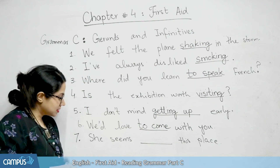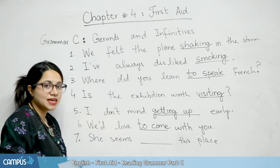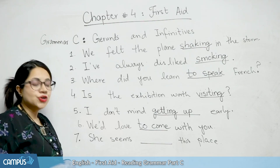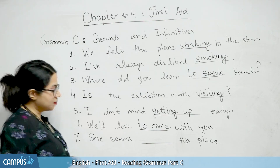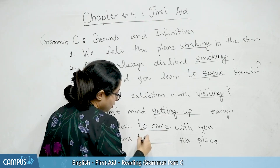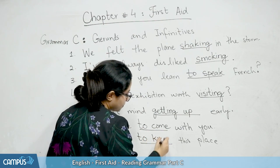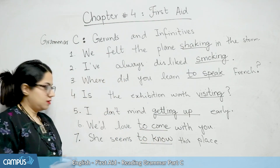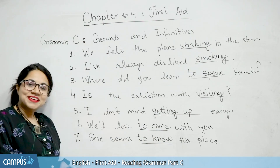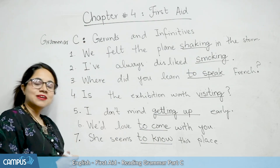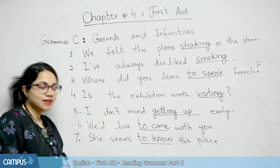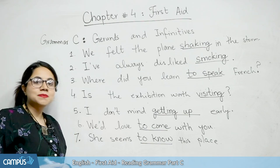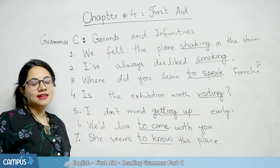The last sentence is: 'She seems blank this place,' and in the bracket we write 'know.' So the answer is: 'She seems to know this place.' That's all — these are your gerunds and infinitives exercises. If there are any questions, please ask me. I'll meet you in the next lecture. Until next time.